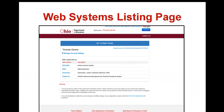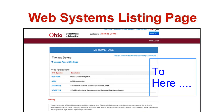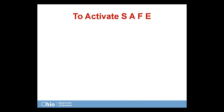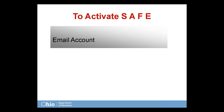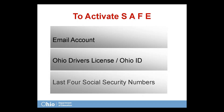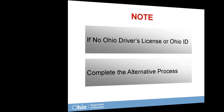The purpose of this tutorial is to assist you in setting up and using a SAFE account. To begin the SAFE account activation process, you will need to have an accessible email account, your Ohio driver's license or Ohio issued identification card, and your last four social security numbers.